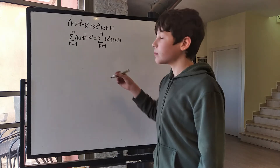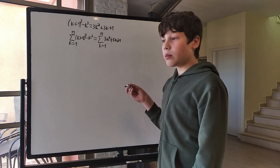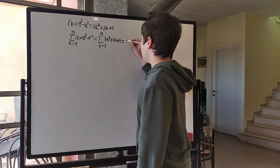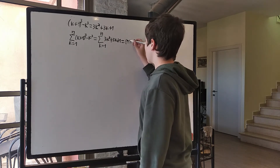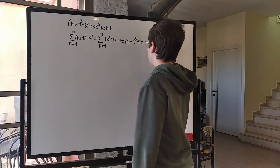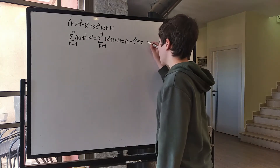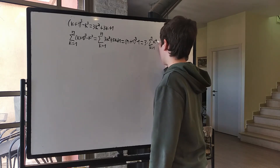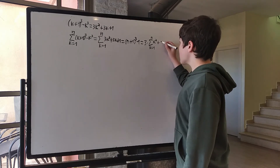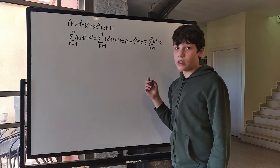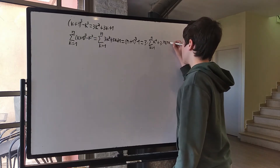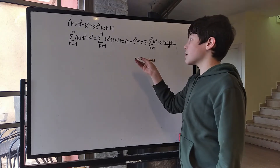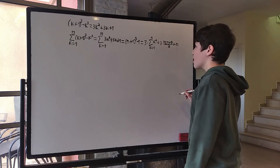Just like last time, the left-hand side telescopes to simply (n+1)³ minus 1. So we have (n+1)³ minus 1 equals 3 times the sum from k=1 to n of k², plus 3 times the sum from k=1 to n of k — which we already found is n(n+1)/2 — plus the sum from k=1 to n of 1, which is n.